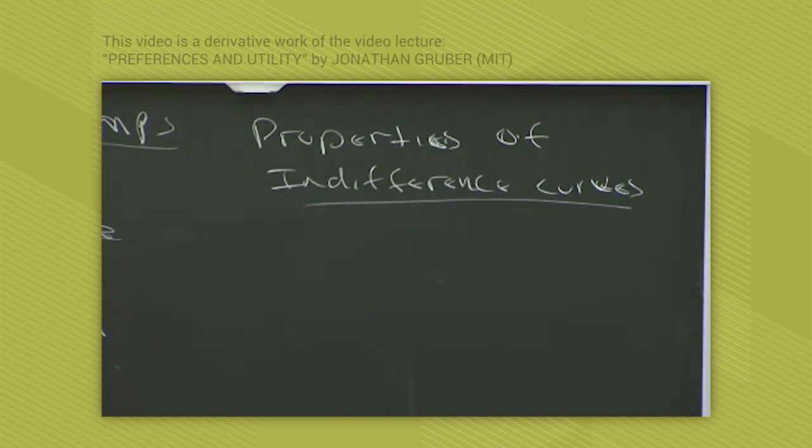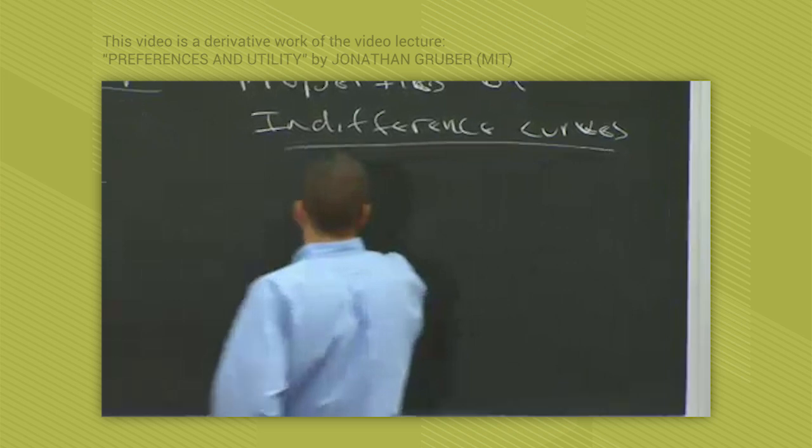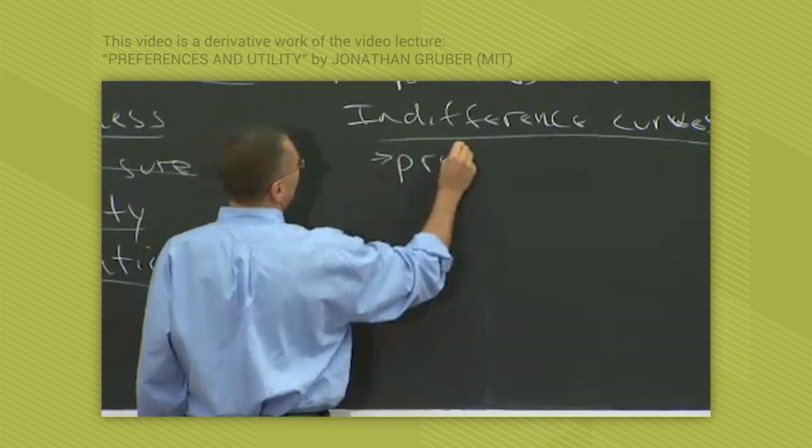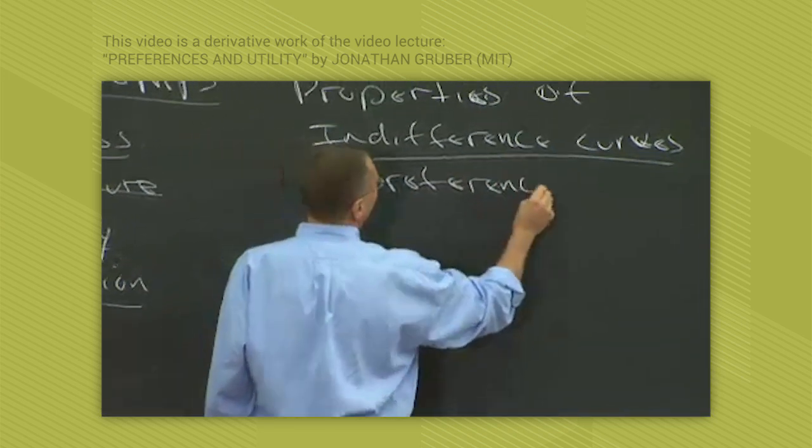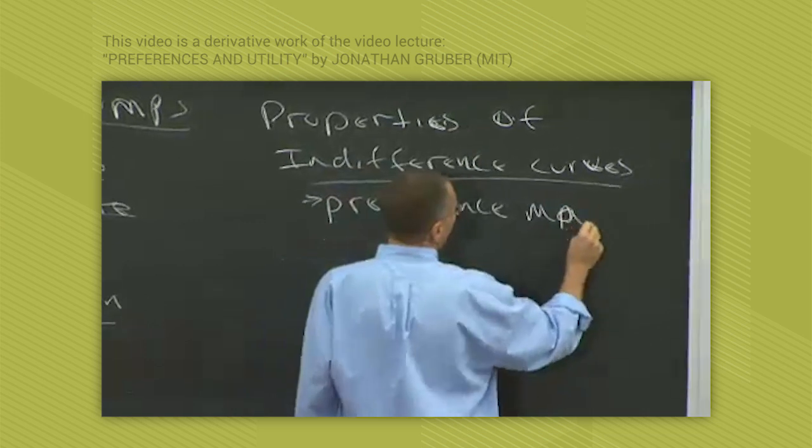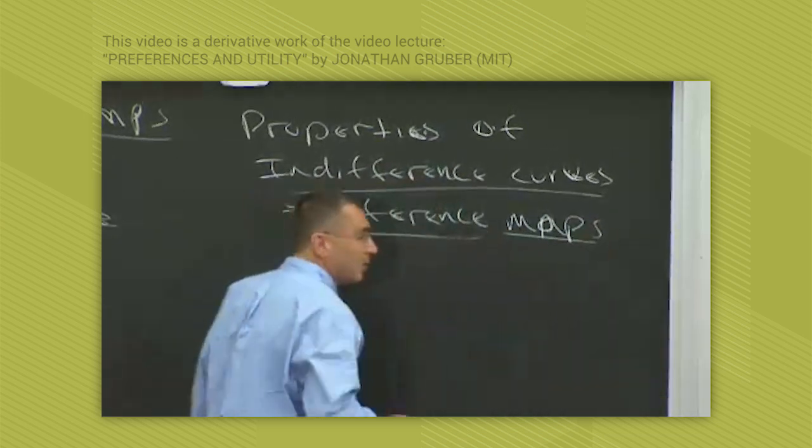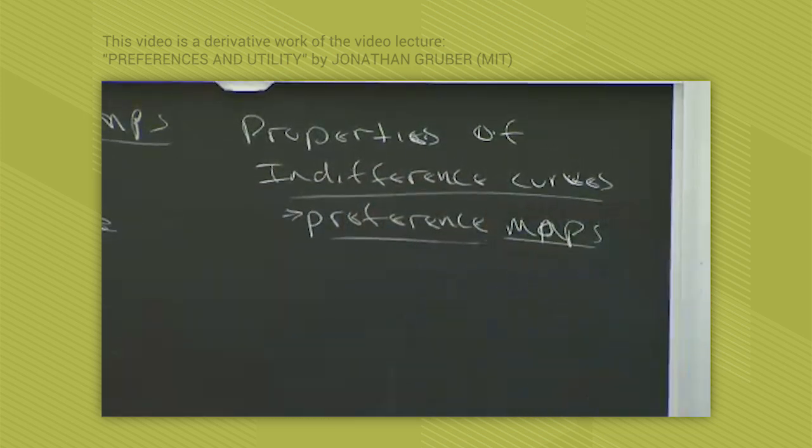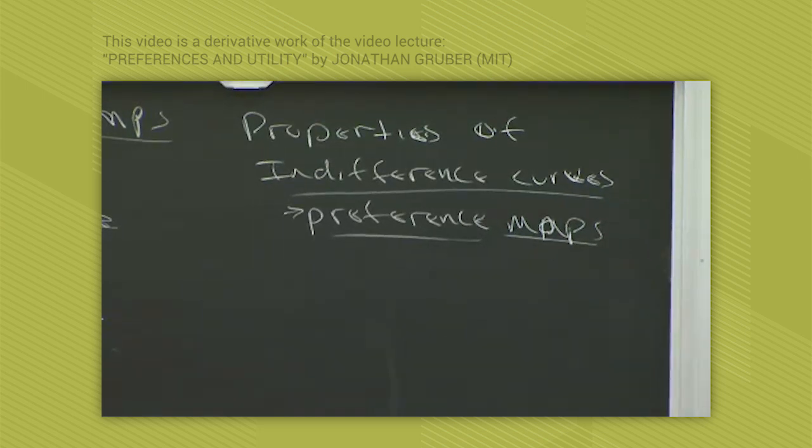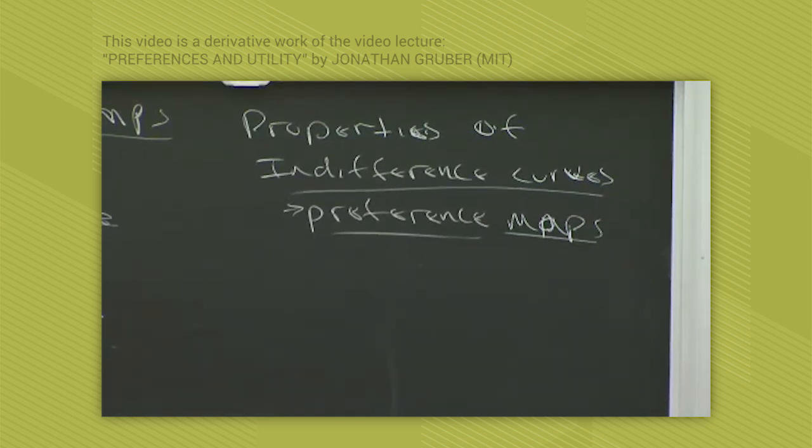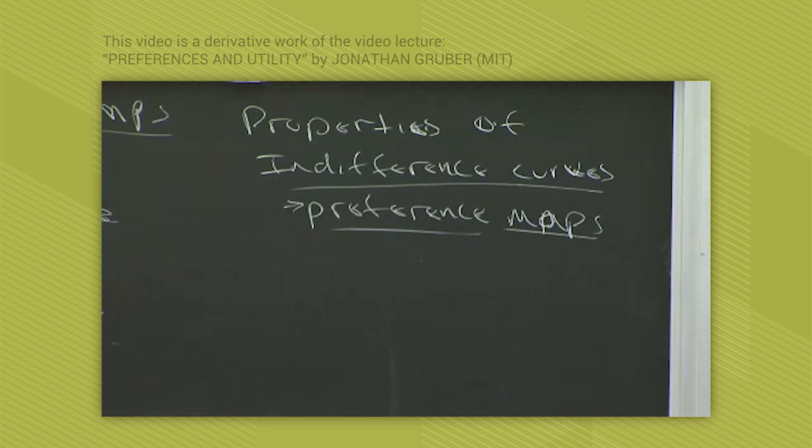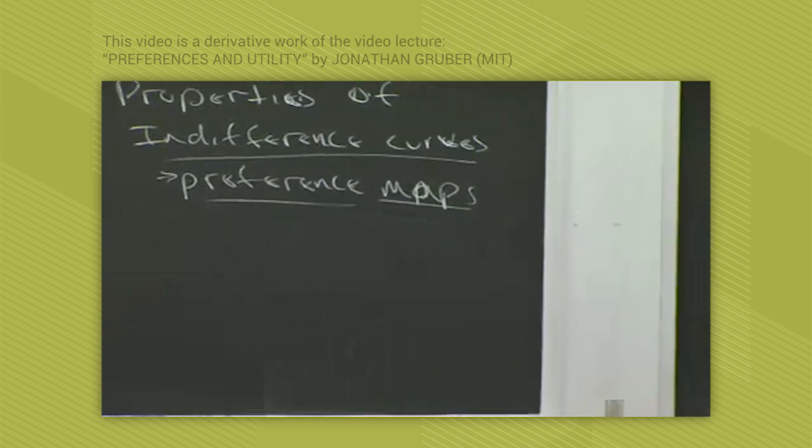So indifference curves are our name for what you could also think of as preference maps. In economics, we like to be able to describe everything three ways: intuitively, graphically, and mathematically. Preference maps are the graphical representation of people's preferences, which we do through indifference curves.